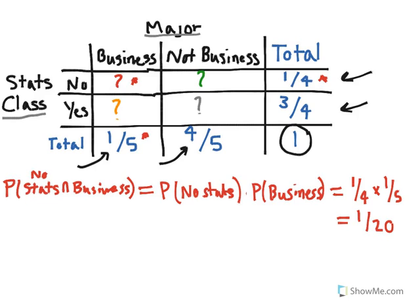If we look at, for example, this one here—again, they're independent events—we look at the probability that yes, they have taken stats before and they're not a business major.